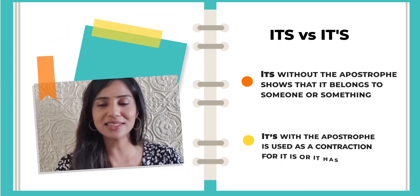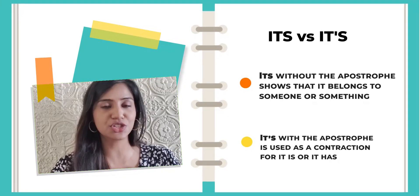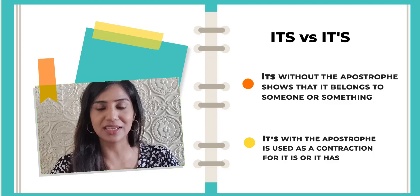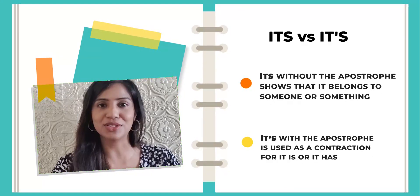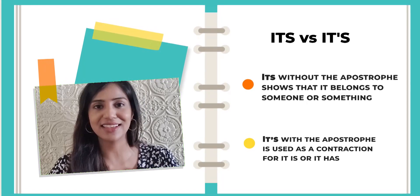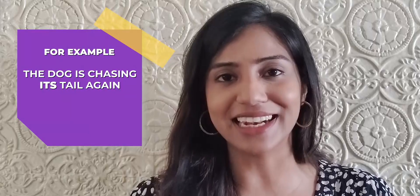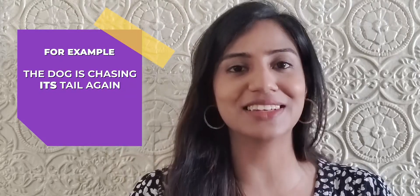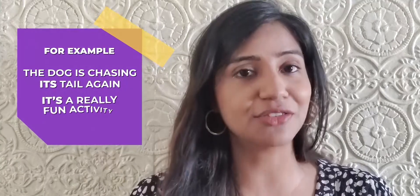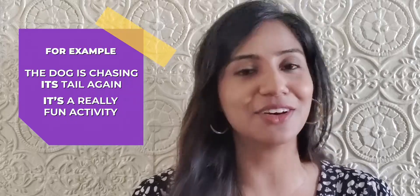Number 7: its versus it's. Its without the apostrophe is always used to mean that the object belongs to someone or something. Its with the apostrophe is a contraction of the words it is or it has. For example: the dog is chasing its tail again — it is chasing the tail belonging to the dog. I can also say it's a really fun activity — here I am contracting the words it is.